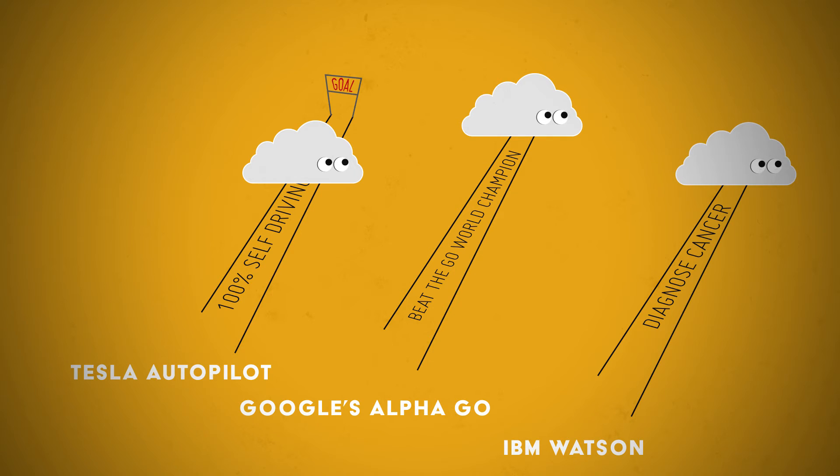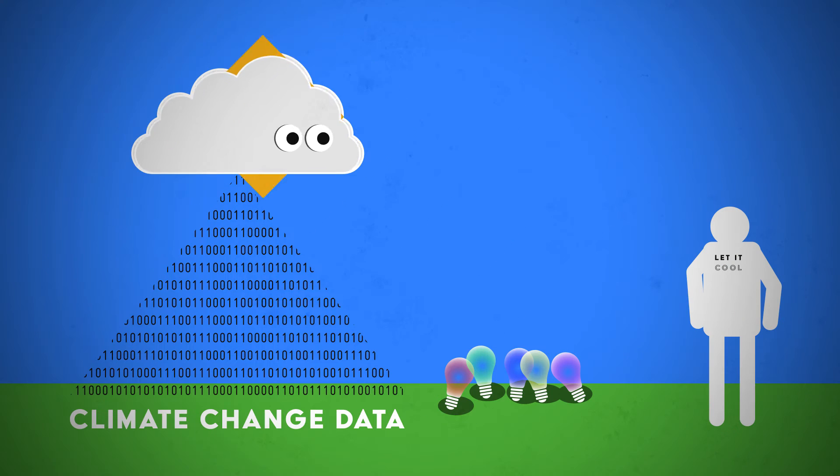If our climate change AI has access to enough big data, it will give us insights in return. So provided we got an abundance of high quality data gathered from CubeSats and other sources, what shall we tell our climate change fighting AI to do?